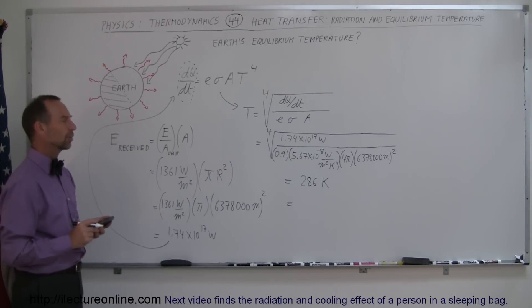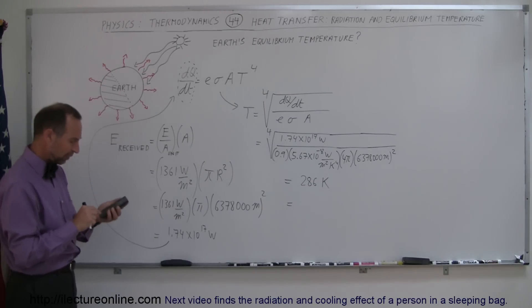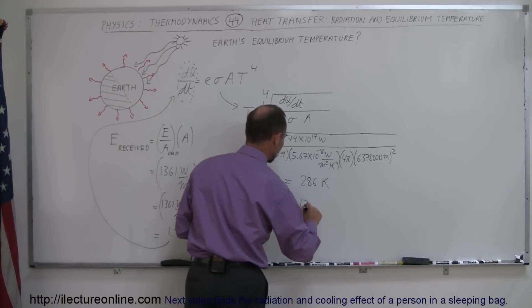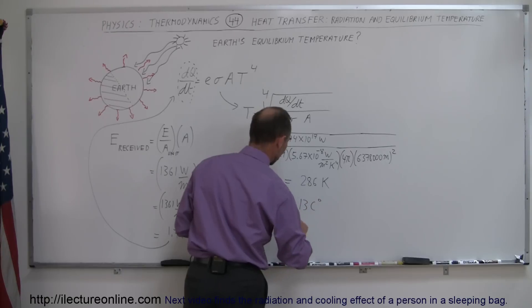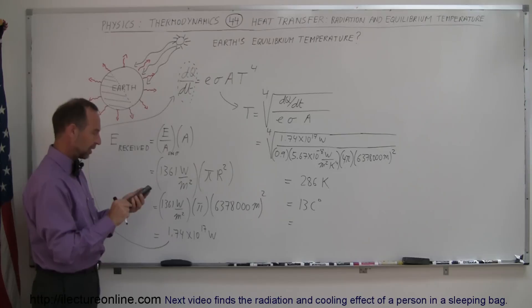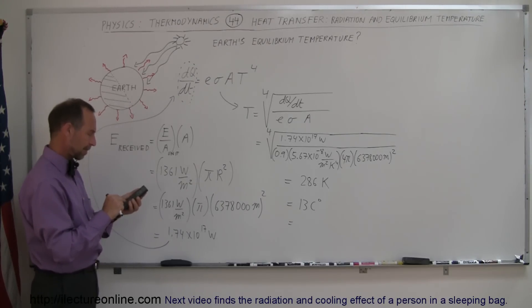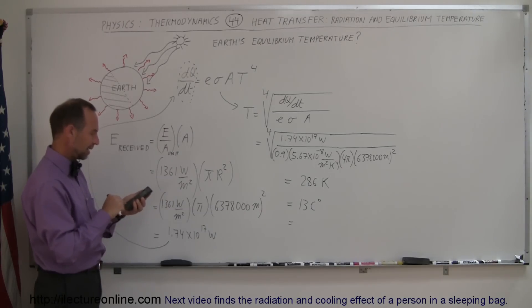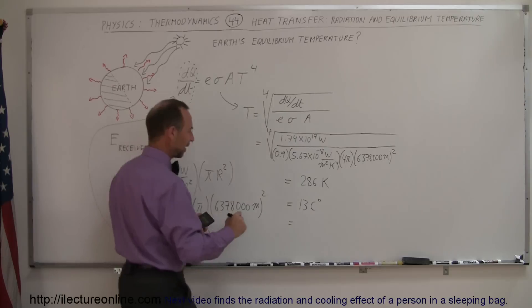How much is that in Celsius and Fahrenheit? If we subtract 273 from 286, we get 13 degrees Celsius. Converting to Fahrenheit — multiply by 9, divide by 5, and add 32 — that gives us 55 degrees Fahrenheit.